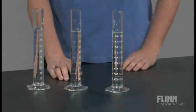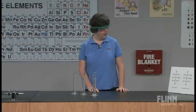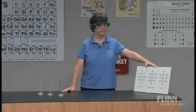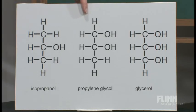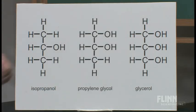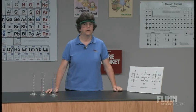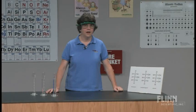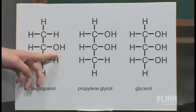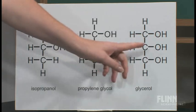Now we have three graduated cylinders that are filled with a liquid. What I have in here are these three liquids: I have isopropanol, I have propylene glycol — or propane diol as it's also called — and I have glycerol. All three of these are three-carbon chains. All three of them have alcohol groups on them and all three of them should exhibit hydrogen bonding. The difference between them is that isopropanol only has one alcohol group, propane diol has two alcohol groups, and glycerol has three.